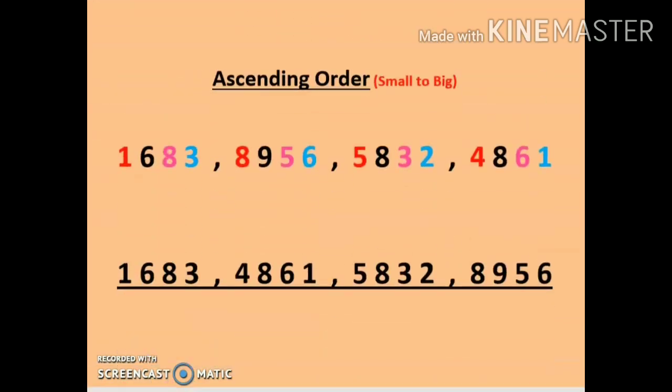As we all know, ascending order means numbers which are arranged from smallest to biggest number. Rule 1 is that whenever we are given any numbers to arrange in ascending or descending order, first we have to count the number of digits.